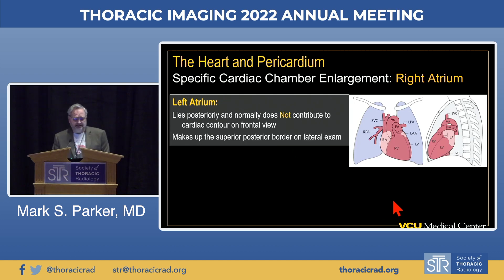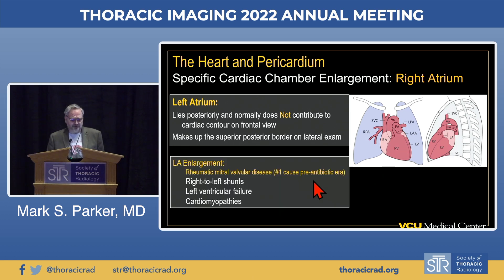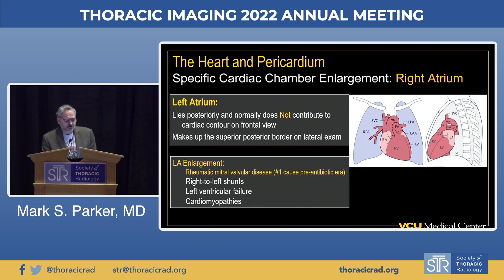The left atrium lies posteriorly and does not contribute much to the cardiac silhouette on the frontal radiograph—it makes up the posterior and superior border on the lateral examination. Previously, left atrial enlargement was most often due to rheumatic valve disease. Now we most often see it as a result of various left-to-right shunts, left ventricular failure, and various cardiomyopathies.